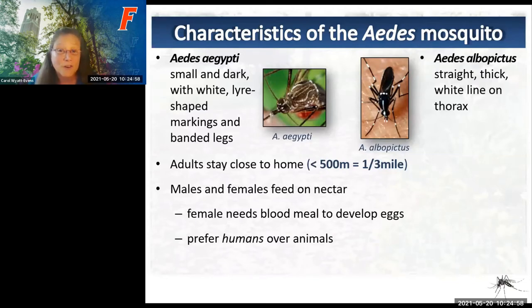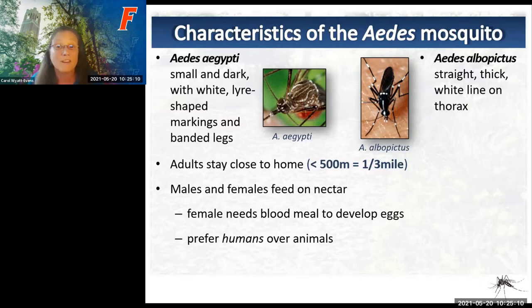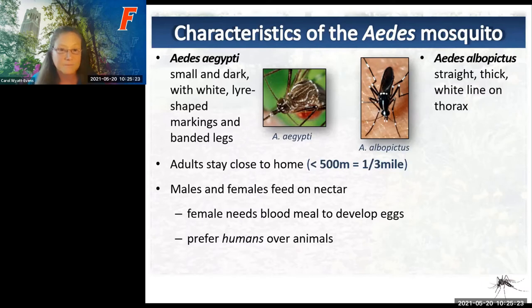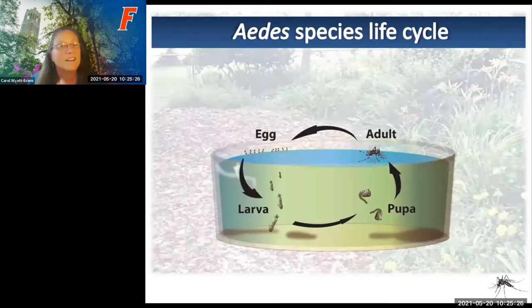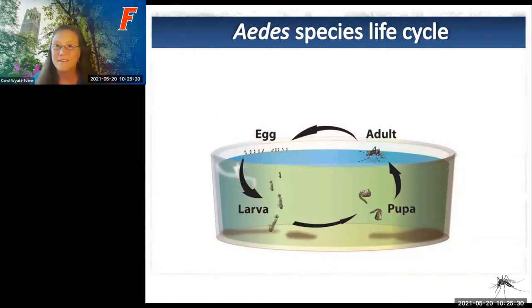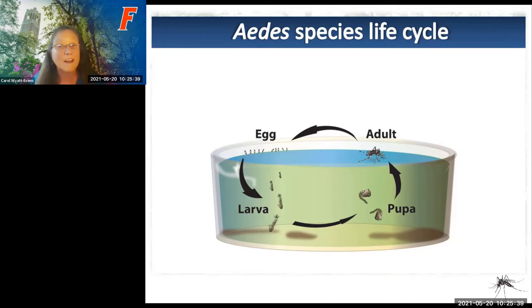Adults feed on nectar. Only the female needs blood to develop her eggs—that's why the female is so important to control, because she's the only one who will bite you and transmit disease. They prefer humans, and they fly, bite, and lay eggs during the day, starting about two hours after sunrise when we're up and active.